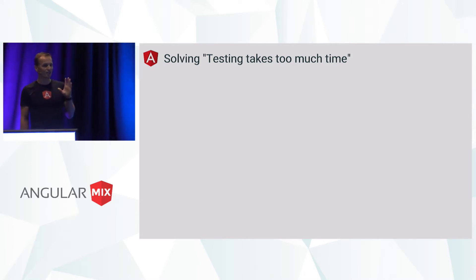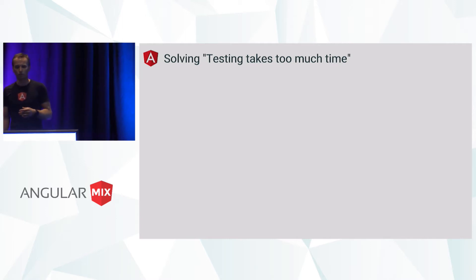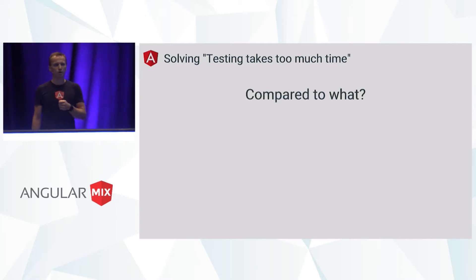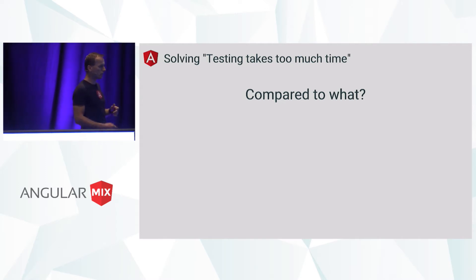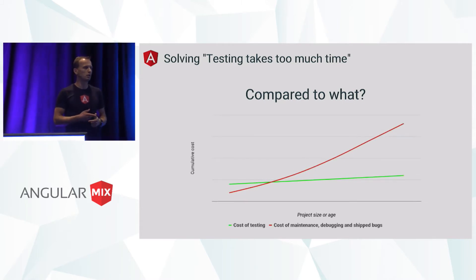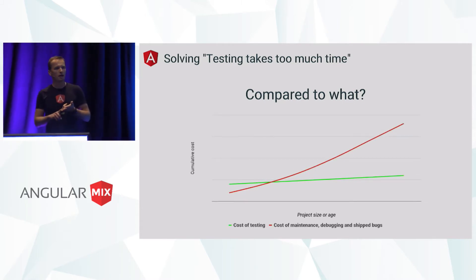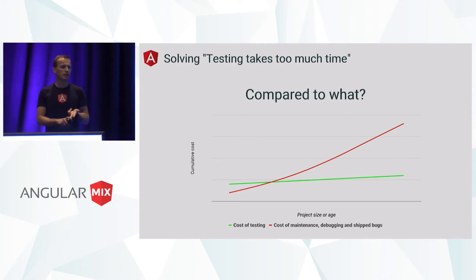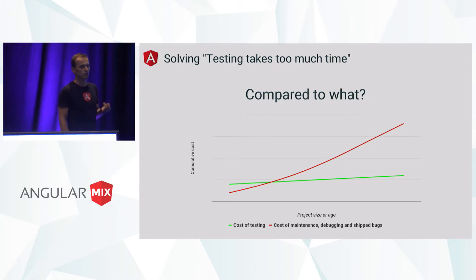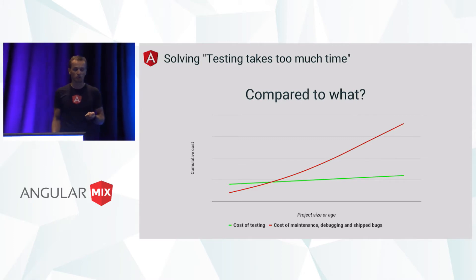That brings us to the argument that it takes too much time to build a test suite. Compared to what? On any serious project, most of the time is actually spent maintaining stuff, debugging, and covering the cost of shipped bugs. If we start with test automation, we can greatly prevent this cost. Basically, automated testing will pay for itself very quickly.